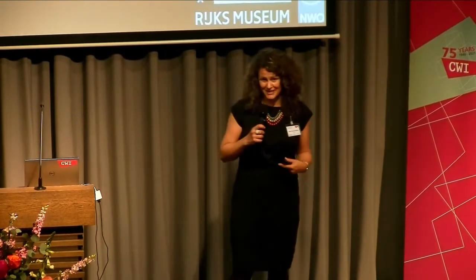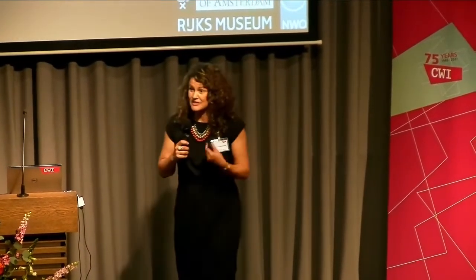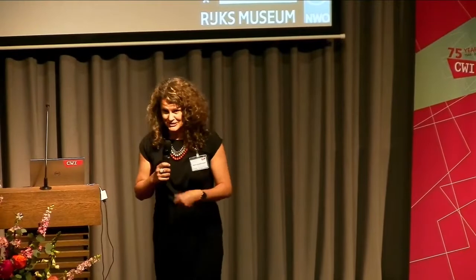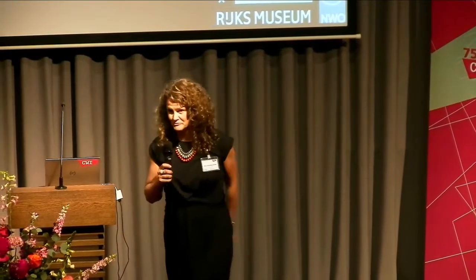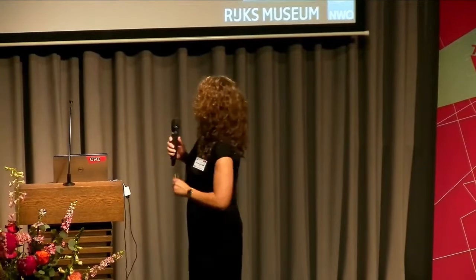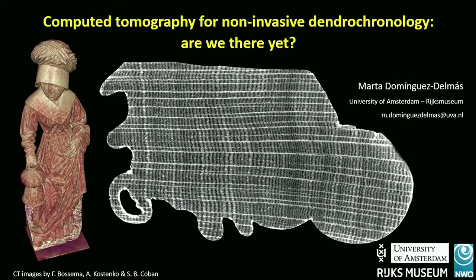The first time I showed this image at a dendro conference, it was on a plenary session, my keynote lecture, and there were more than 200 people there and there was this very loud 'wow,' because this is a diametric cross-section of that little sculpture that Felix showed before. What we can see here is the wood structure — the macro structure. We see vessels, we see the rays, we see the late wood perfectly, so we see all the tree ring boundaries. This is a dream come true for dendrochronologists, especially dendroarchaeologists. This is what we want to see on a computed tomography image.